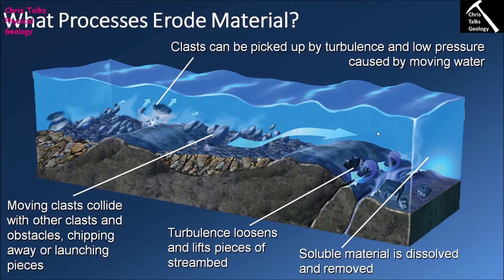When rock is exposed to water that is slightly acidic, a reaction can lead to dissolution — for instance, limestone in contact with slightly acidic water breaks down. We also have the process of hydrolysis, where a chemical reaction between minerals in the rock and the water itself causes minerals like feldspar to break down and produce clay minerals, which can then be picked up and transported by the river. Dissolving the rock through these interactions makes it more susceptible to damage from impacts or turbulence.